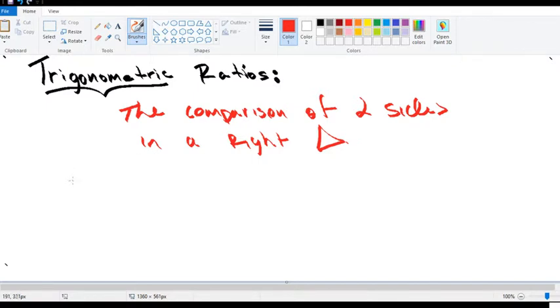So for example, let's say we have something like this: a right triangle. Let's call this ABC. Let's call the opposite side of A lowercase a. This is going to be lowercase b and that's going to be c. Notice the capital letters are denoting angles.